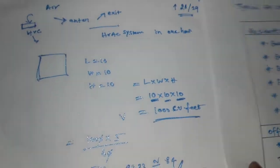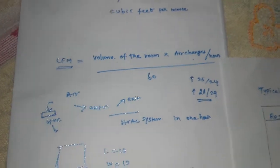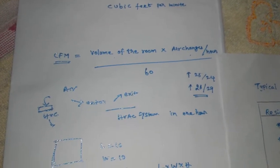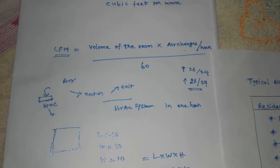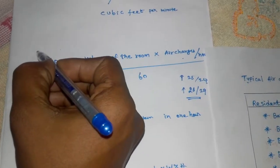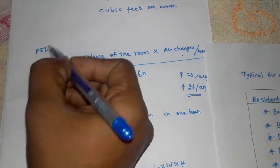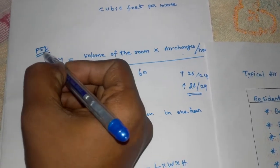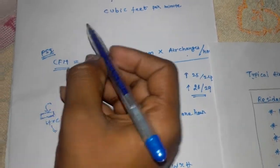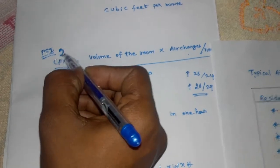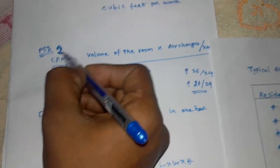CFM is the airflow measured in cubic feet per minute. CFM can also be related to PSI, pounds per square inch — both are measurements of air velocity. Now let's return to our calculation.